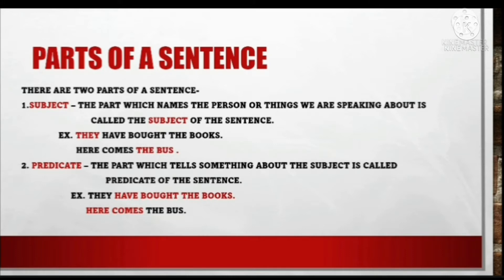Kyonki hamne 'they' ke baare mein kuch kaha hai — kya kaha hai? 'Have bought the books.' To yeh sentence ka predicate part ho gaya. Here comes the bus — isme subject kya hai? The bus hai. Aur bus ke baare mein hum kya baat kar rahe hain? 'Here comes' — that is the predicate.